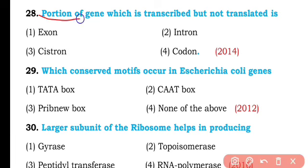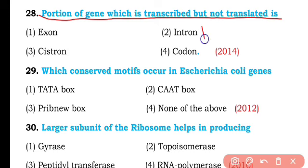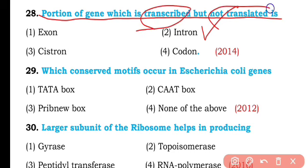Question number twenty-eight. The portion of a gene which is transcribed but not translated is: axon, intron, cistron, or codon? So the correct answer is option two — intron is a portion of a gene that is transcribed but is a non-coding region, so it is not translated.